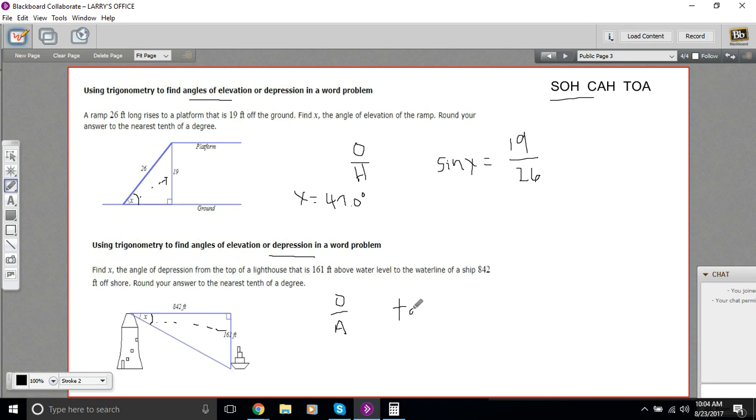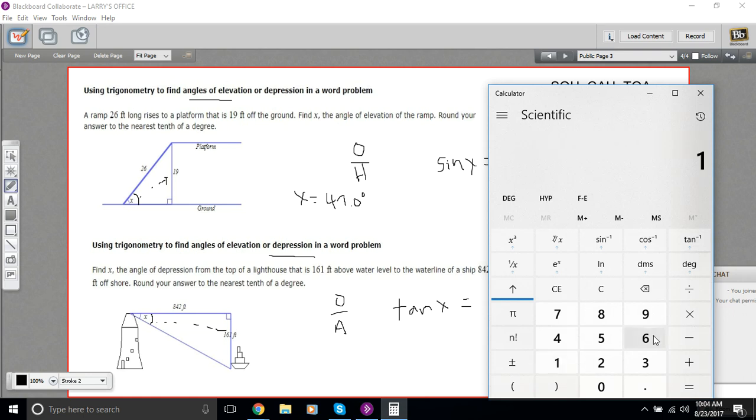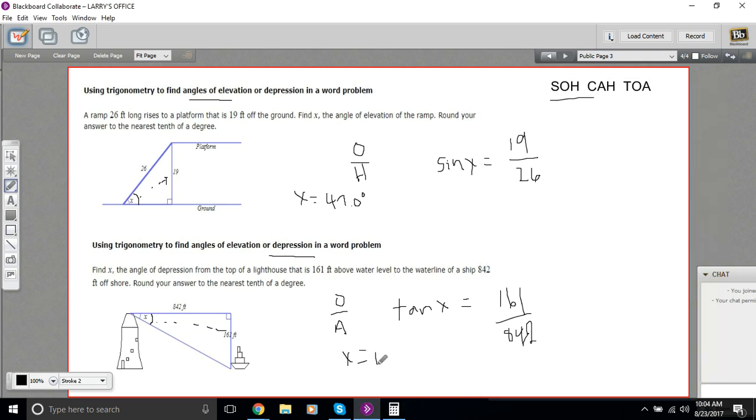So I'm going to write the tan of x equals the opposite, which is 161, over the adjacent, which is 842. And we'll do something similar on the calculator. So 161 divided by 842. And then I've still got the inverse functions up here. I can see that it's got that little negative one there. So the inverse tangent, 10.8 to the nearest tenth. So this angle is 10.8 degrees.